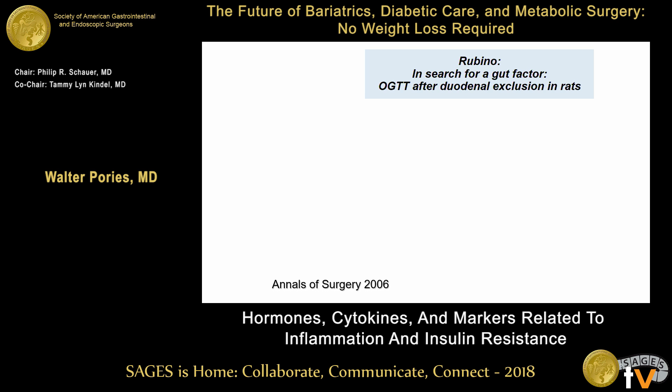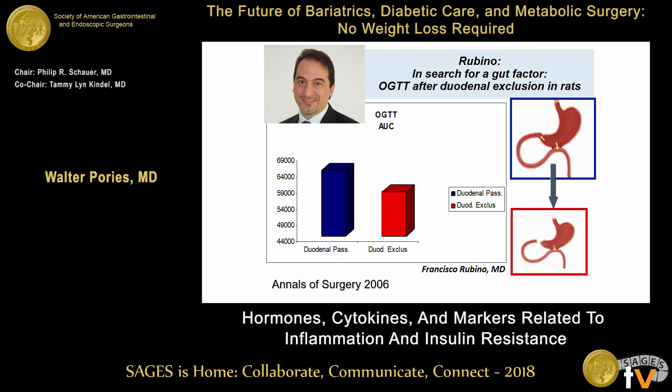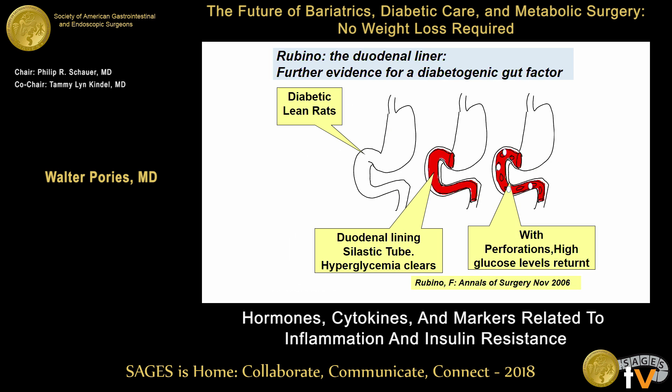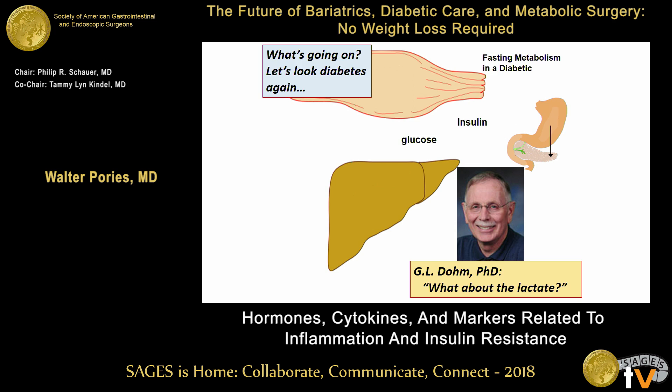Rubino, in response to this question, did those brilliant experiments in high-fat rats. When he excluded the duodenum, there was a marked reduction in glucose. His second study was even more brilliant — he managed to line the duodenum in rats. Again, the glucose cleared, and when he perforated that liner, it recurred. Kazany had a series of patients, and the few that could tolerate the liner for a year also had a drop in HbA1c. So clearly, the gut plays a role — but it still didn't fully answer the questions.